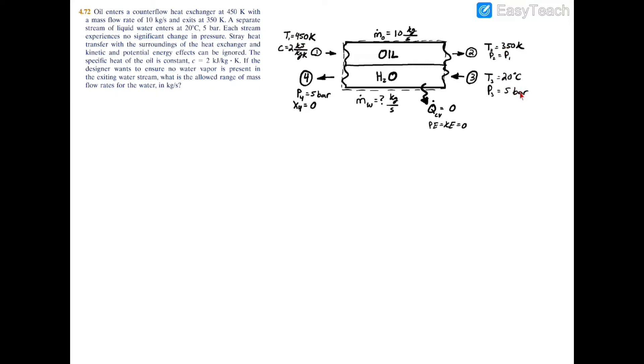We have cold water entering at 20 degrees Celsius and 5 bar, and this is liquid water. We're told that in this heat exchanger we don't want to have any water vapor present, so the exit of the water at exit 4 should have a quality of x4 equals zero.